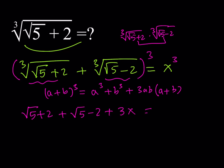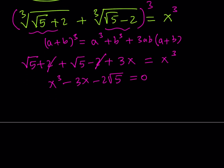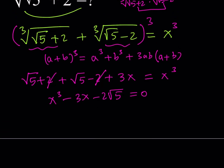This whole expression is equal to x³. The 2s cancel, and we get an equation: x³ − 3x − 2√5 = 0. I'll spare the full derivation and give you the solutions directly, since I don't want to make this video too long.